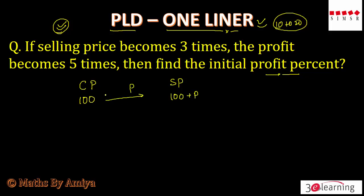I hope that is clear. Just assume cost price is 100, profit is P, selling price is 100 plus P. Now profit becomes 5 times, so new profit becomes 5P. So our selling price becomes 100 plus 5P, because cost price is constant.